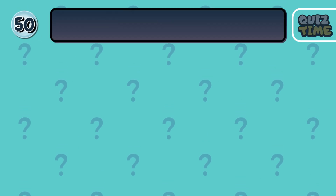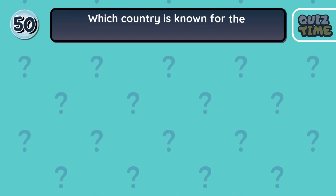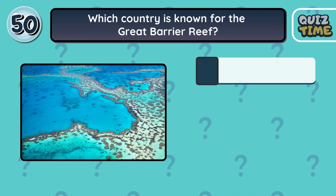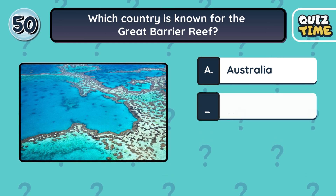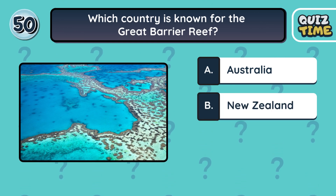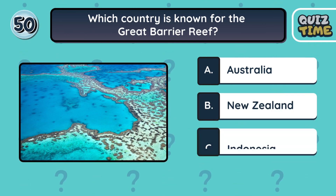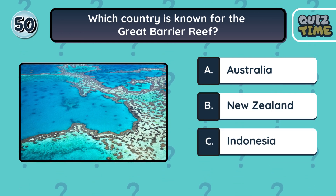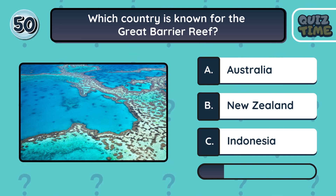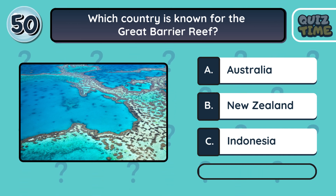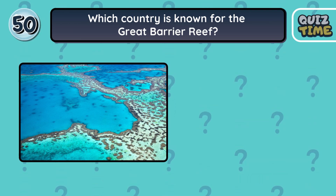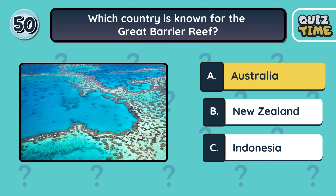Number 50. Which country is known for the Great Barrier Reef? A. Australia. B. New Zealand. C. Indonesia. The correct answer is A. Australia.